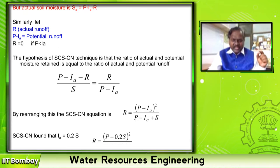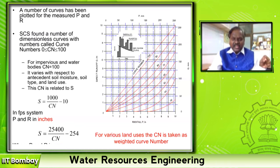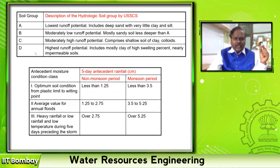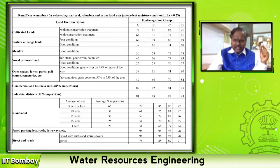S is the maximum potential soil moisture retained in a given soil, which is a function of soil type and land use. Based on several experiments, a relationship was given between soil types A, B, C, D — classified by runoff potential: lowest, moderate, high, and very high — and different land uses. They assigned a number called the curve number, varying from roughly 60 to 95 in practice.